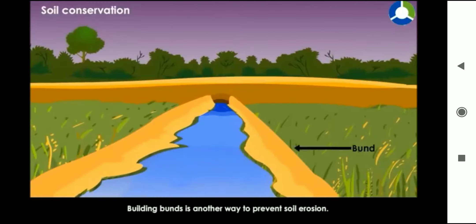Building bunds is another way to prevent soil erosion. Tall mud walls called bunds are built on the sides of the river.